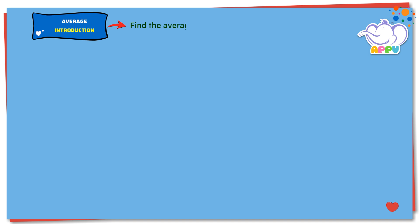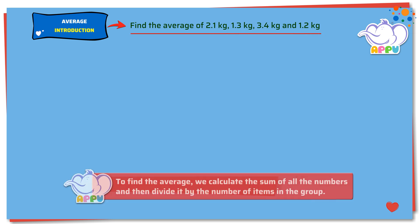Find the average of 2.1 kg, 1.3 kg, 3.4 kg, and 1.2 kg. We know that average equals sum of all the numbers divided by number of items in the group. Let's write the sum first.